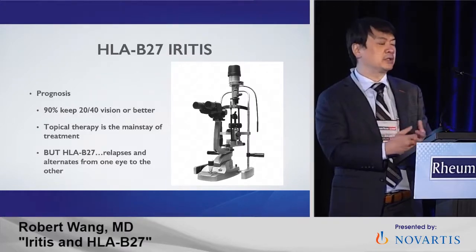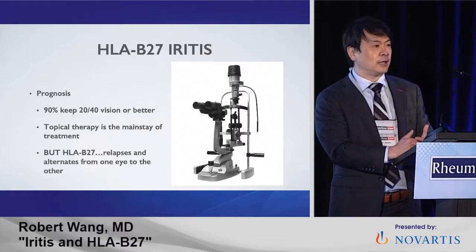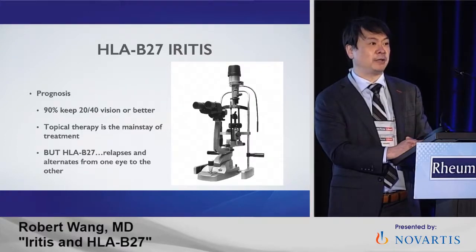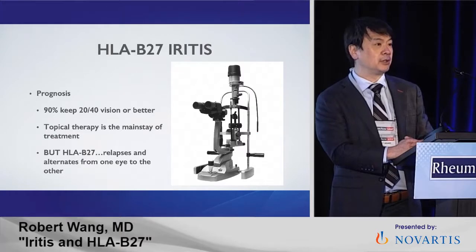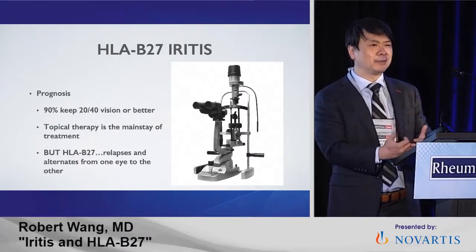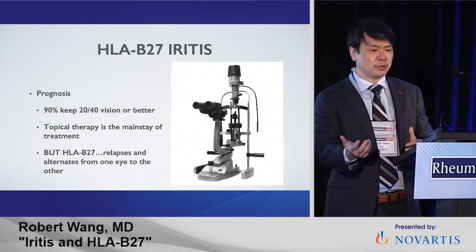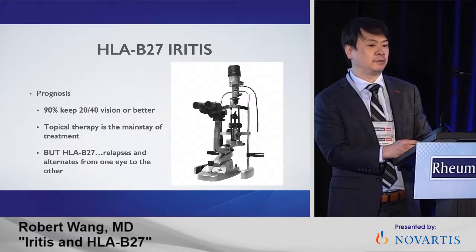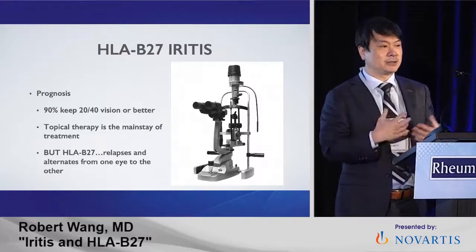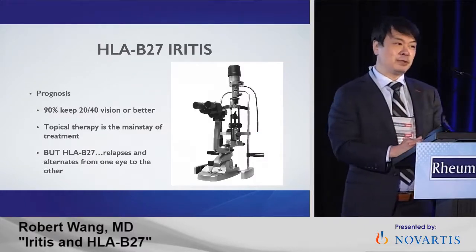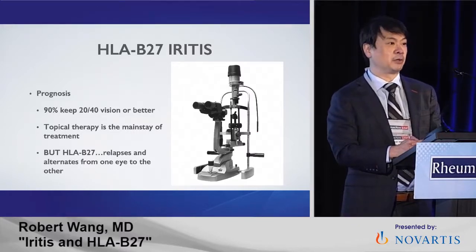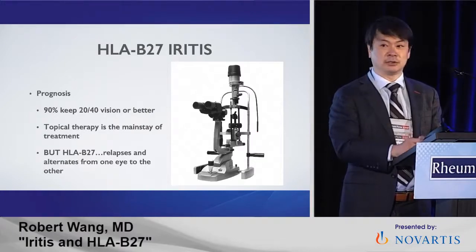What makes you decide which treatment to use? If you look at all HLA-B27 or all iritis patients, 90% of them keep 20/40 vision or better regardless of what we do. So in general it has a good prognosis. When weighing putting someone on Humira or a systemic, this should be relatively simple because most keep good vision. Topical therapy tends to be the mainstay of treatment. HLA-B27 is different — it tends to relapse, alternate from one eye to the other, and tends to be more aggressive. So HLA-B27 is the one you put an asterisk by — it might need systemic therapy.